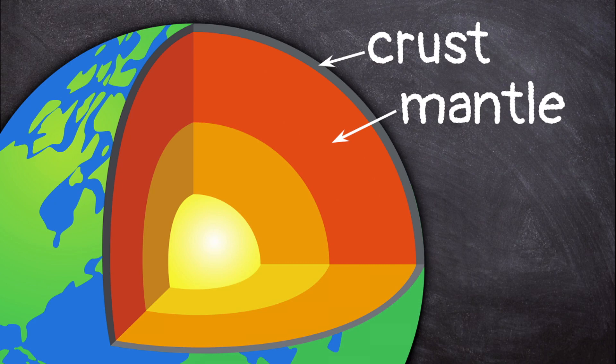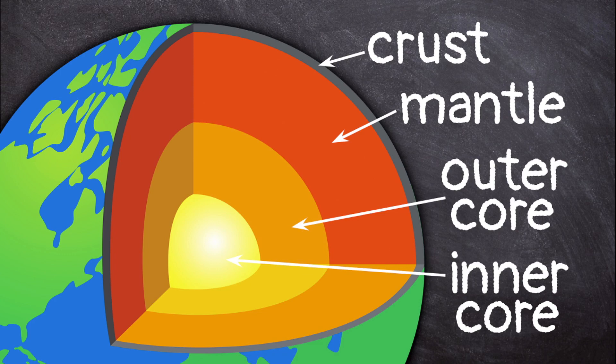The Earth has an outer core and an inner core. First comes the outer core, which is about 3,000 miles below the Earth's surface. The outer core is also made of magma, but instead of melted rock, it is melted metals like iron and nickel. The outer core creates the Earth's magnetic field.